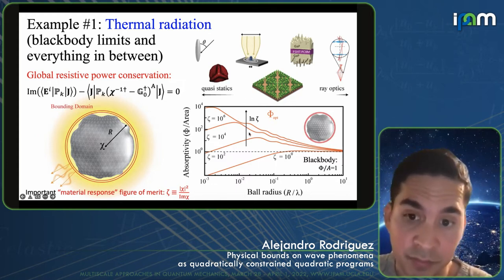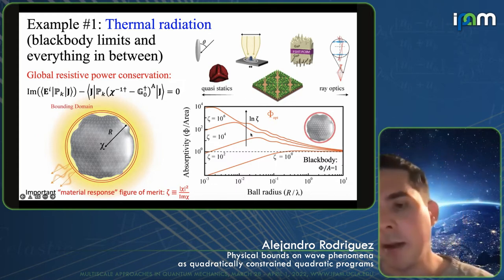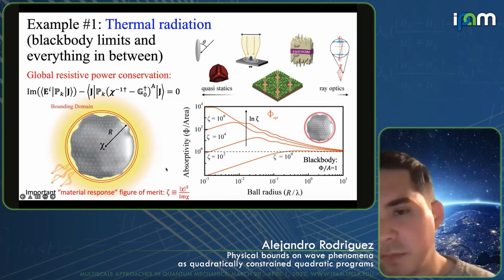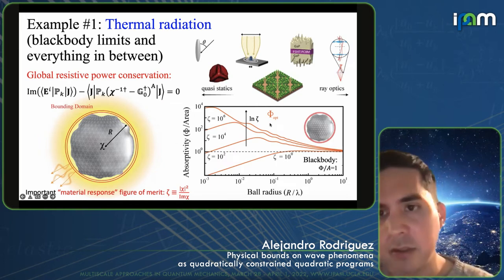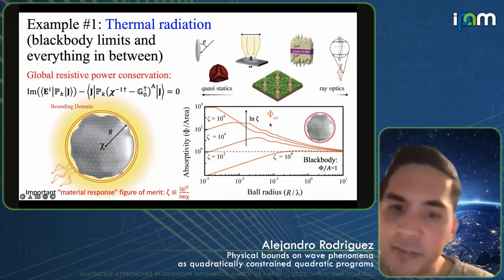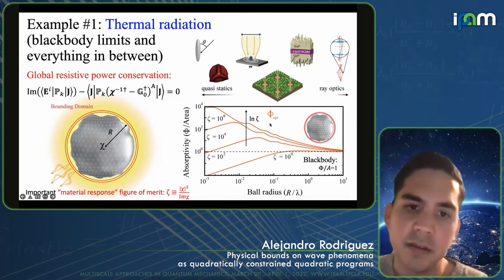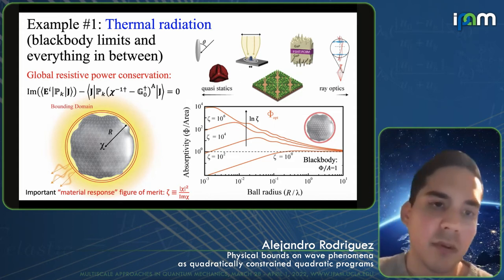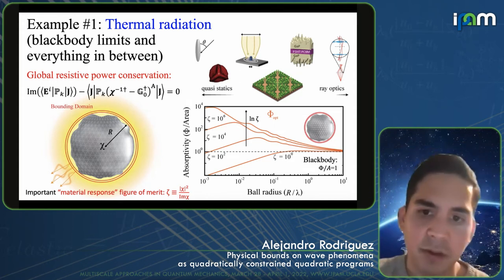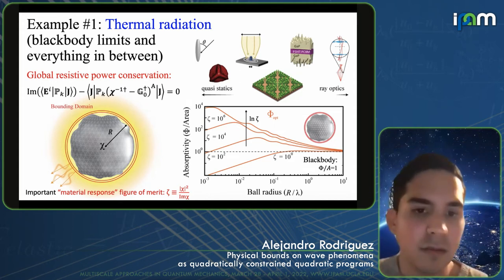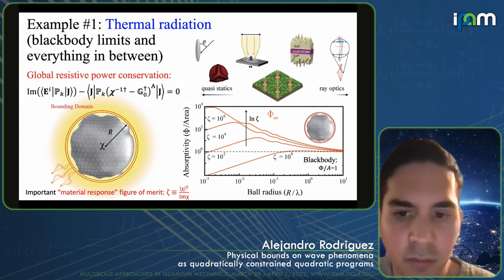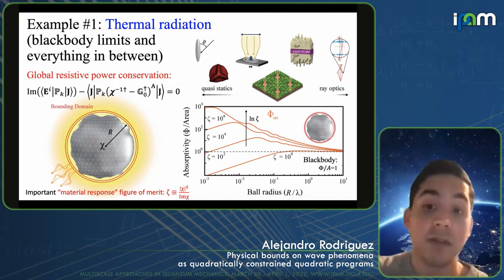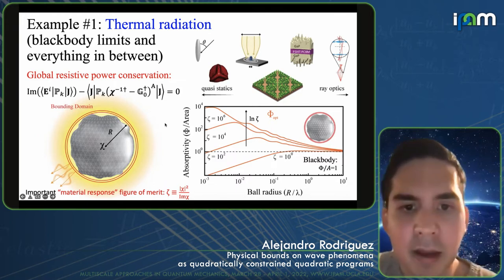The limits scale logarithmically with ζ. Just the simple global resistive power conservation gives you a lot of intuitive physics — capturing ray optics, Rayleigh scattering, and everything in between.